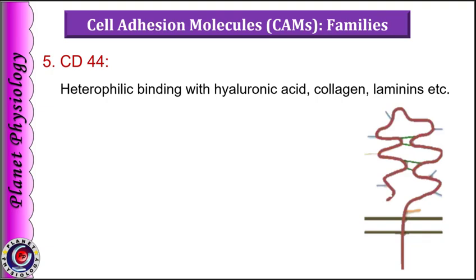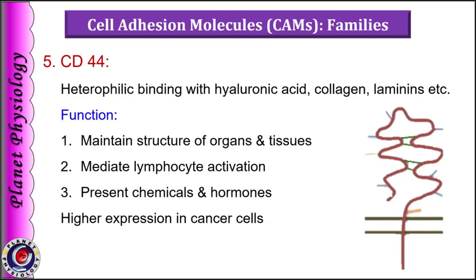CD44 adhesion molecules are single-chain molecules found on all cells. They are involved in cell to cell and cell to matrix interactions, and mainly attach to hyaluronic acid, which is an integral component of the extracellular matrix, but also show attachment to other matrix proteins like collagen and laminin. The major physiological role of CD44 is to maintain organ and tissue structure. Certain isoforms can also mediate lymphocyte activation and present chemicals or hormones to other cells. Their expression is increased in cancer cells, making them potential markers for cancer detection as well as targets for cancer therapy.